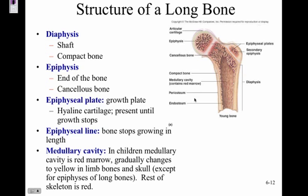The medullary cavity runs down the diaphysis and contains red bone marrow in children. As you grow older, it is converted into yellow bone marrow. The epiphyses usually retain red bone marrow, but the diaphysis changes to yellow marrow.